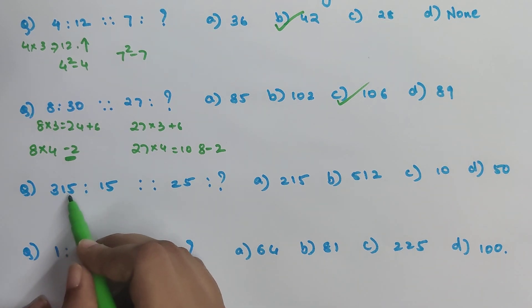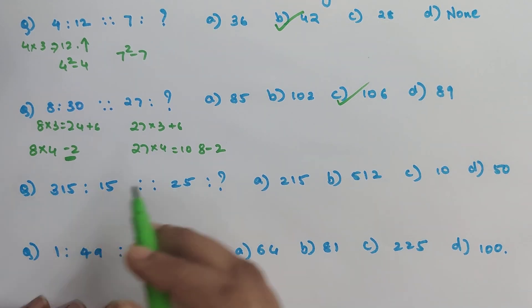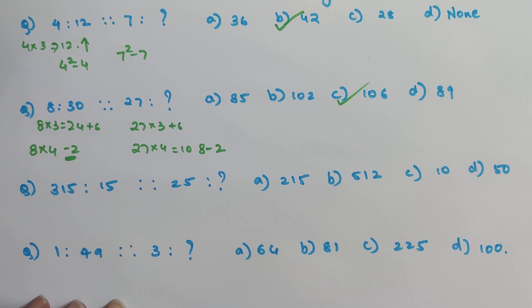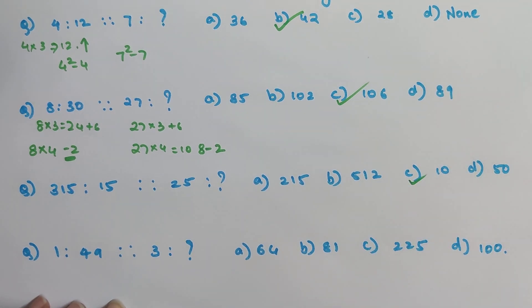So just look over here: 3 into 1 into 5 gets you what? 15. So 2 into 5 should get you what? 10 and that is a part of your option, correct?